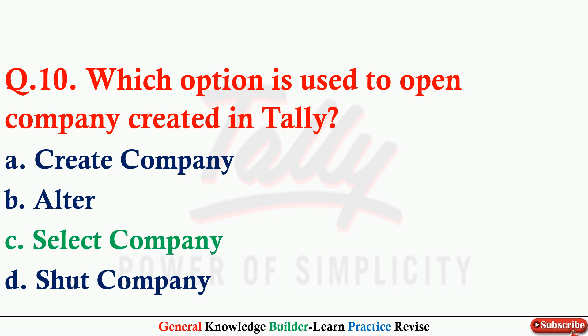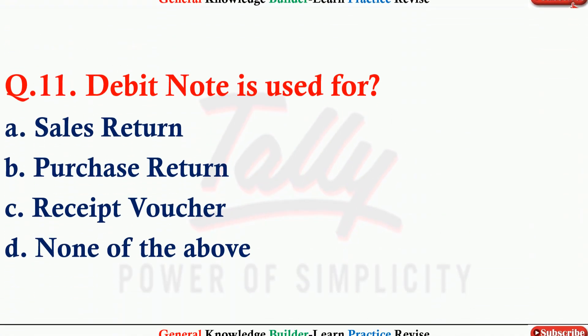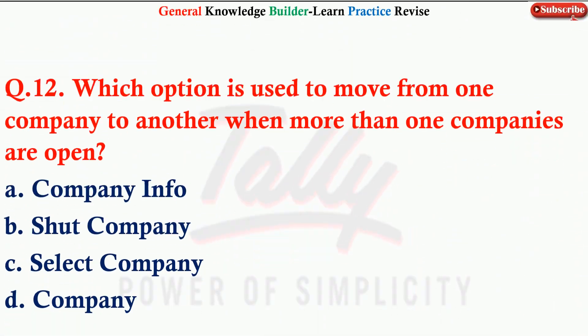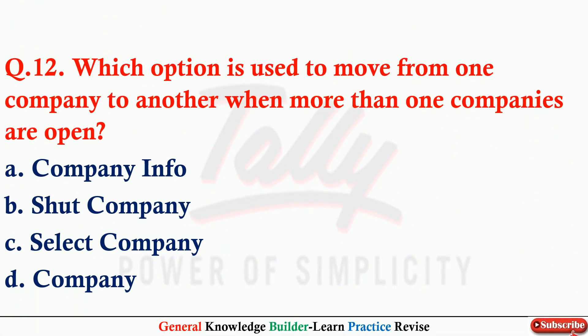Q10: Which option is used to place company data from a pen drive or CD entirely to its appropriate place? Option C: Select Company. Q11: Debit note is used for — Option B: Purchase return. Q12: Which option is used to move from one company to another when more than one company is open?